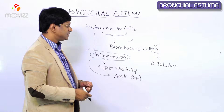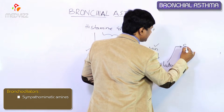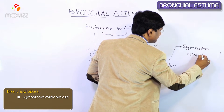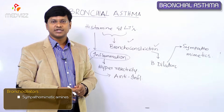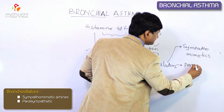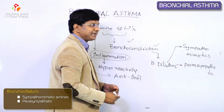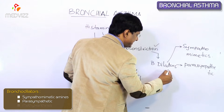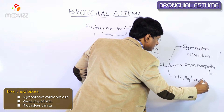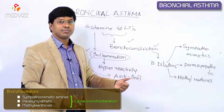For bronchodilation, the first group of drugs we have is sympathomimetic amines, which will cause bronchodilation. The second group is parasympathetic drugs. And lastly, we have methylxanthines. These are the three groups of drugs which will cause bronchodilation.